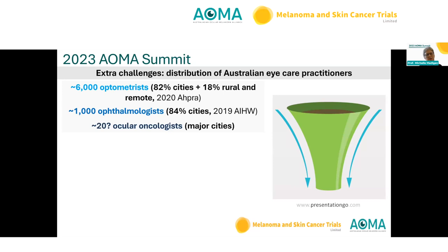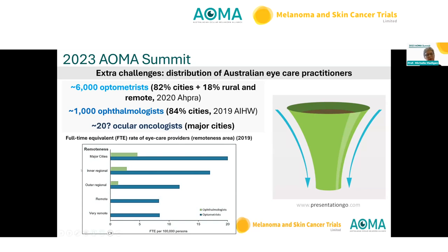There's an extra challenge in Australia: roughly 6,000 optometrists, about 1,000 ophthalmologists, and an estimated 20 ocular oncologists, mostly in cities. Optometrists also tend to be in rural and remote areas more. Comparing ophthalmologists and optometrists, there could be an issue seeing people in rural and remote areas, and if lots of referrals of things that don't need immediate care come through, there could be a bottleneck.